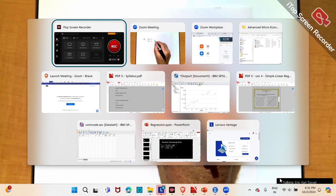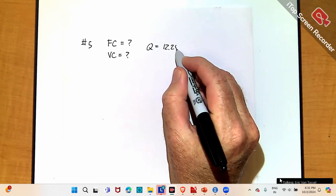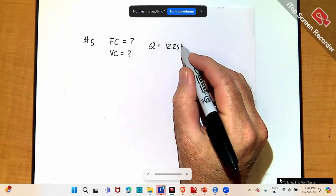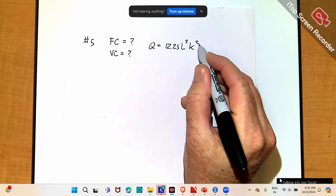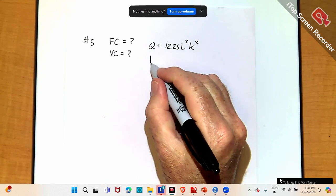So, in that case, you have this production function, 12.25 times L squared K squared. So that's your production function, and it says K is fixed to 2.